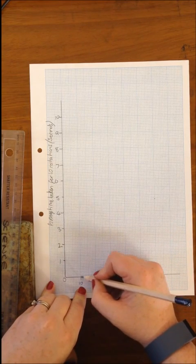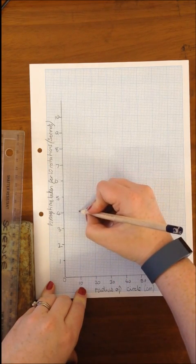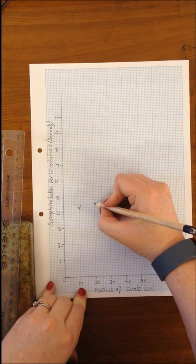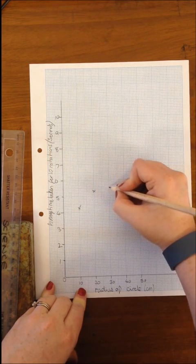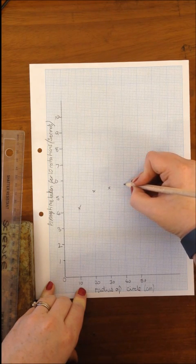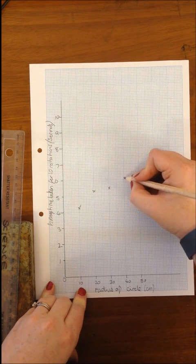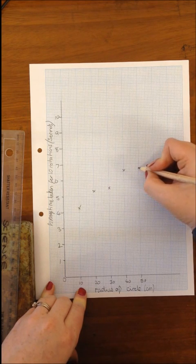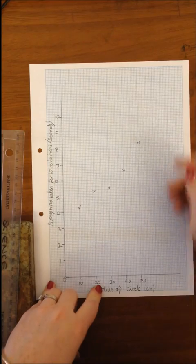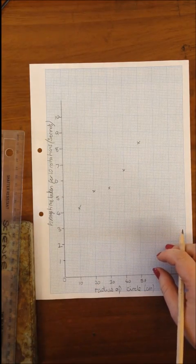10 centimetres, it went up to 4.3. 20 centimetres, it was 5.3. 30 centimetres, it was 5.5. 40 centimetres, it was 6.6. 50 centimetres, it was 8.3. So, that's my line there.